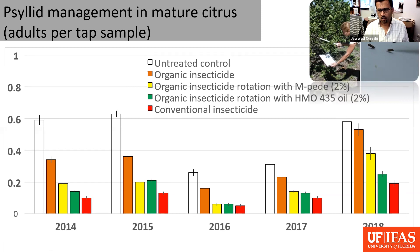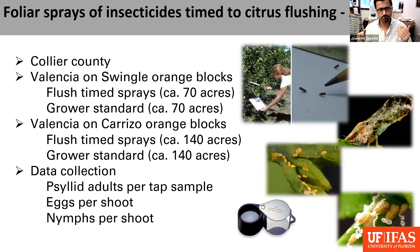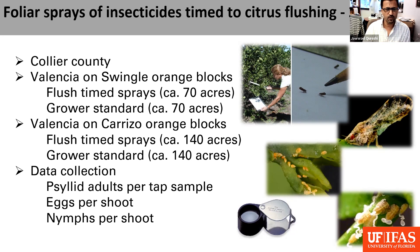For the last few years, we have been working with another idea — again considering tree phenology — basically trying to see if we can target the citrus flushes, because that's where psyllid populations are concentrated when the flush comes up. If we can target around those periods, we can get more reductions in psyllid populations and may be able to save one or more applications.